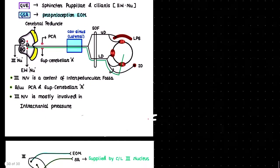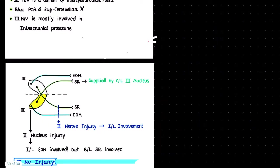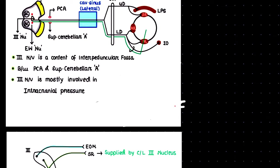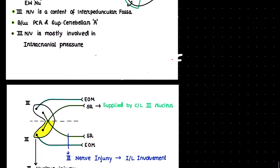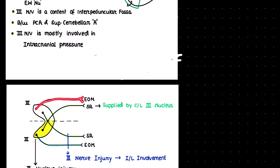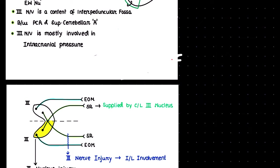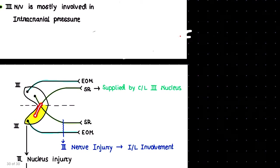Now looking at a zoomed diagram of the third cranial nerve nucleus, the nuclei are joined together. The extraocular muscles are supplied ipsilaterally — the fibers arise from the same side and supply the same side. However, the fibers supplying the superior rectus are different: they originate on one side, cross into the opposite nucleus, and supply the contralateral part. They decussate at the level of the nucleus itself.